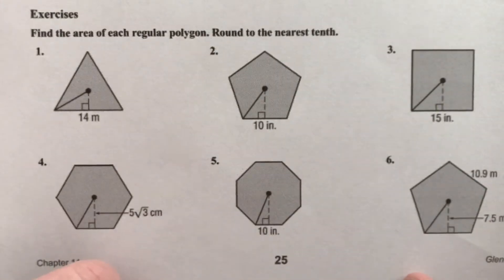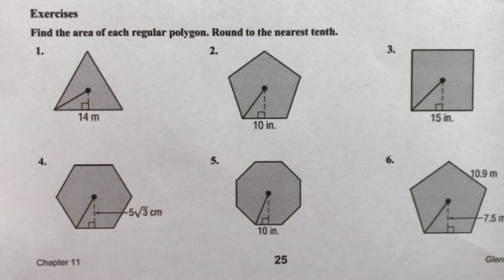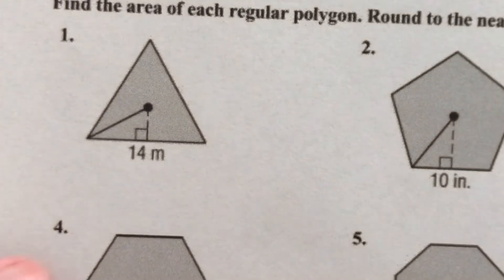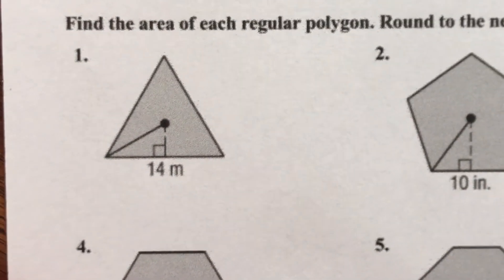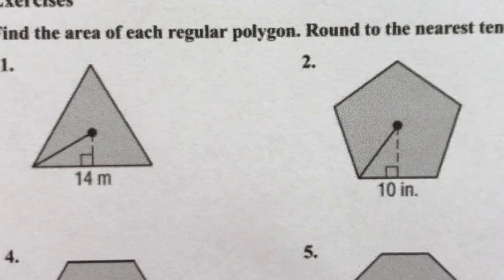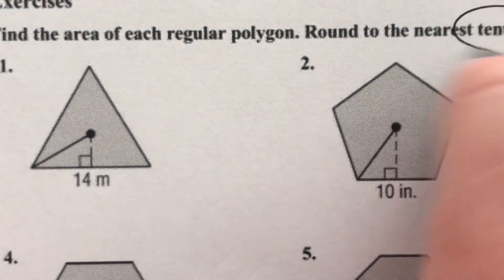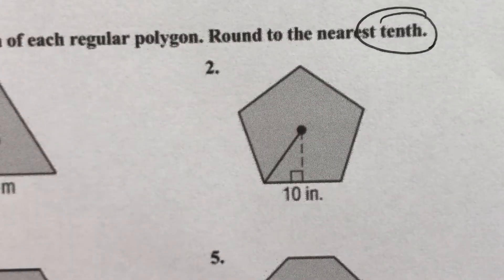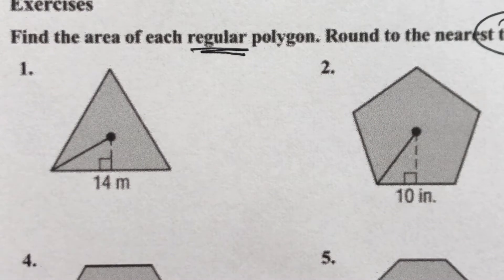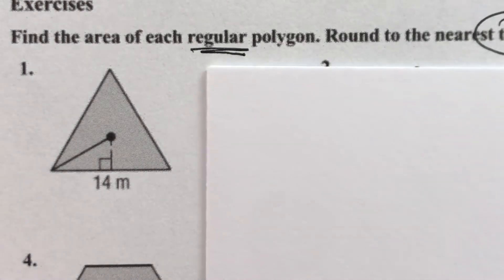On this video we're going to go over six problems. Find the area of each regular polygon, round to the nearest tenth. It does tell us that they are all regular, so all the sides of each shape are congruent to each other. That's important to know.